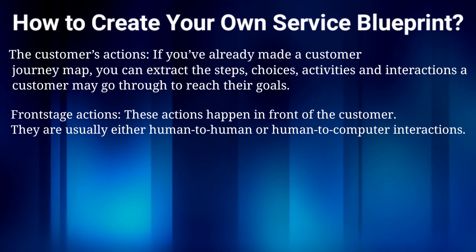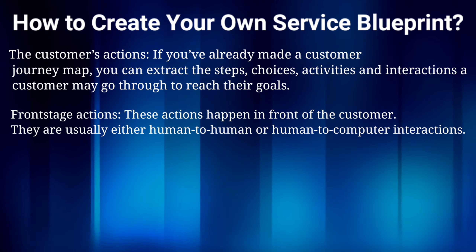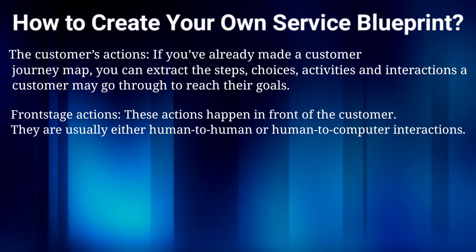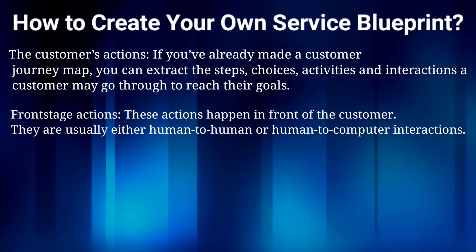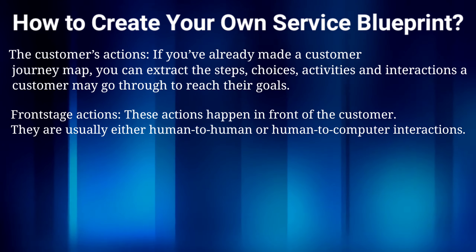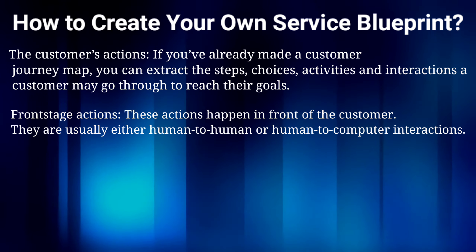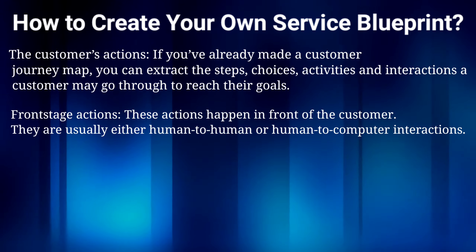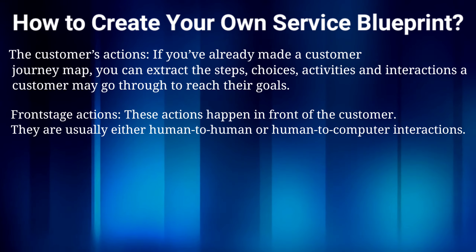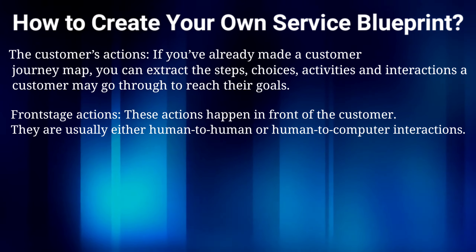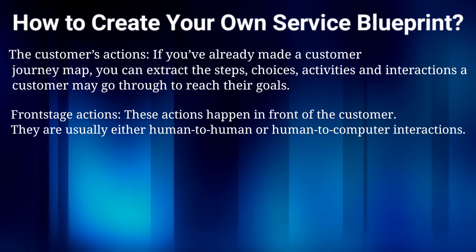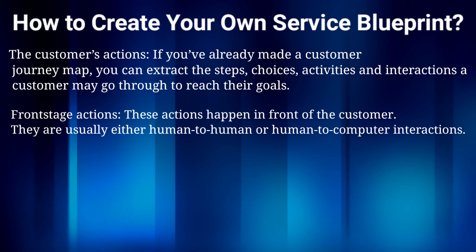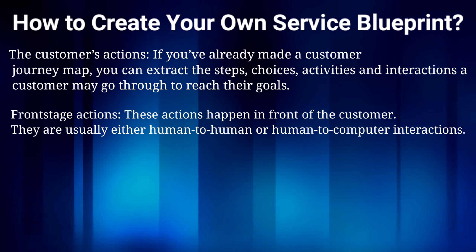The second component is front stage actions — activities that happen in front of the customer. These are either human-to-human interactions, such as a customer interacting with an employee at a cash counter, or human-to-computer interactions, such as a customer using an ATM. These are visible contact employee actions — the activities that the contact employee performs which are visible to the customer. In the legal service example, the attorney's visible actions include the initial interview, intermediate meetings, and face-to-face delivery of legal documents.